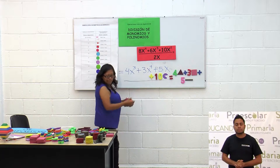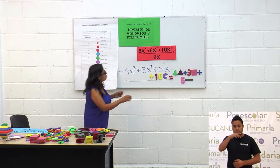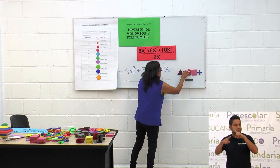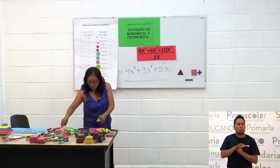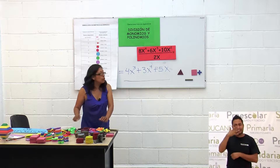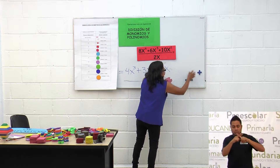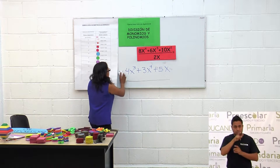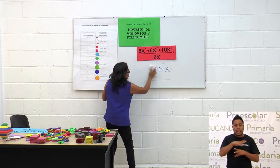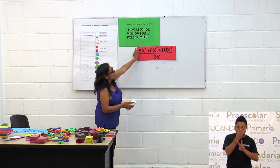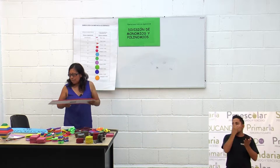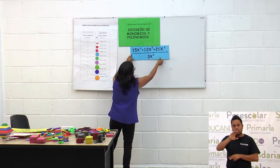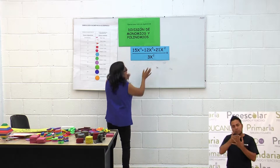Recuerden que en álgebra utilizamos también las operaciones básicas, así como en aritmética. Las operaciones básicas son: la suma, la resta, la multiplicación, la división y la radicación, que en términos generales incluye raíz cuadrada y raíz cúbica. Vamos a poner otra división de polinomio entre monomio.